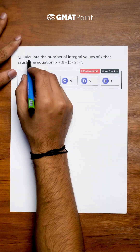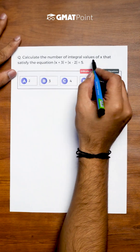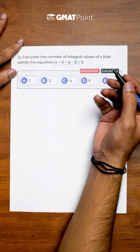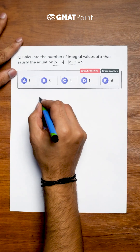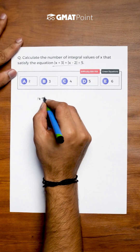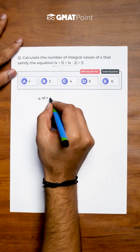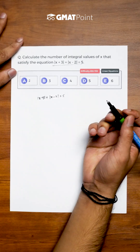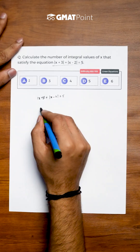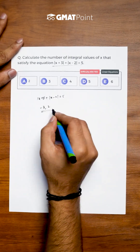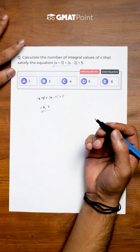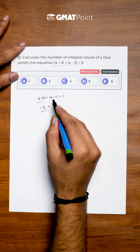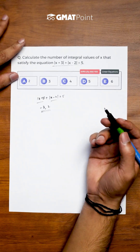Let us see how to solve this question. Calculate the number of integral values of x that satisfy the given equation. The given equation is |x+3| + |x-2| = 5. The critical points of this equation are -3 and 2, because at -3 and 2 the values inside the modulus become 0.